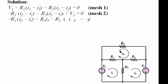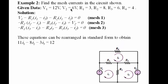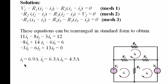For mesh three (I3), starting from this point: minus R1 multiplied by (I3 minus I1), minus R4 multiplied by I3, minus R3 multiplied by (I3 minus I2), equals zero. By substituting the given numbers into these equations and rearranging, we get the system of equations. Solving these three equations gives us I1, I2, and I3.